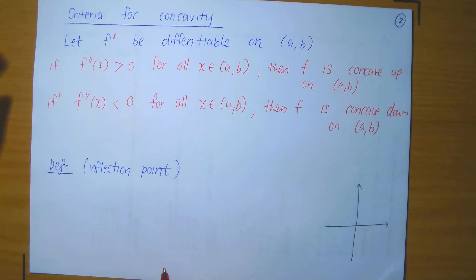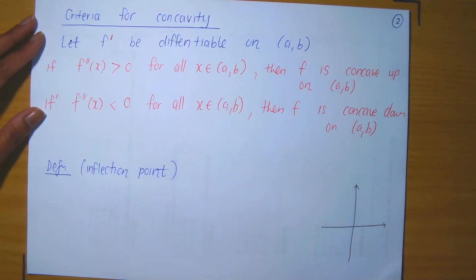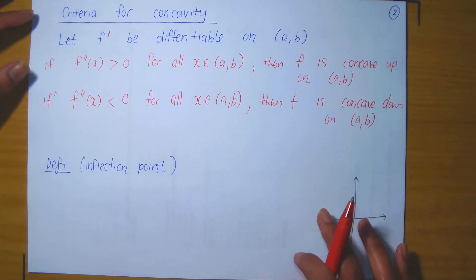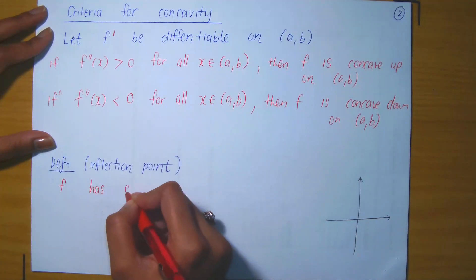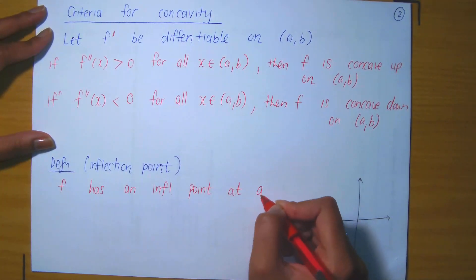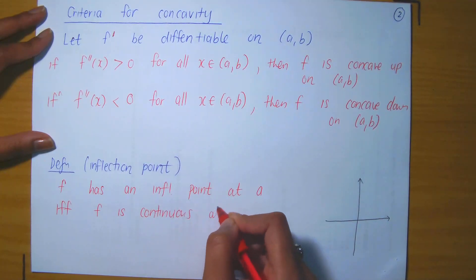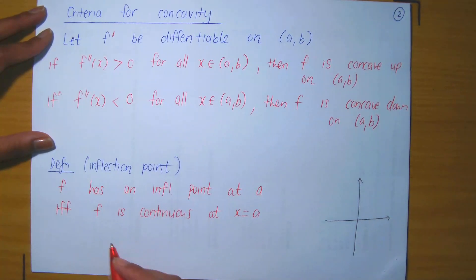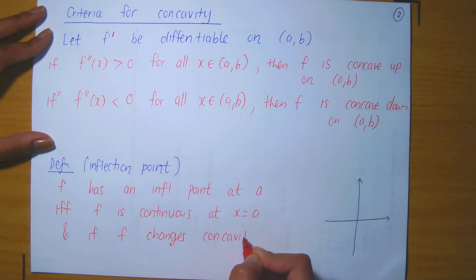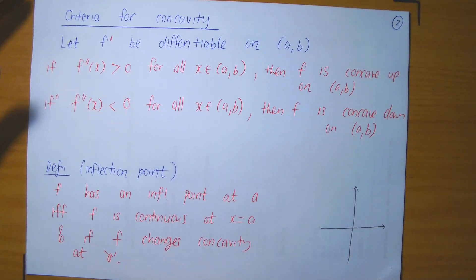In addition, we have the concept of an inflection point. If function f has an inflection point at x = a, if and only if f is continuous at x = a, and f changes concavity at x = a — meaning it changes from concave up to concave down, or concave down to concave up.